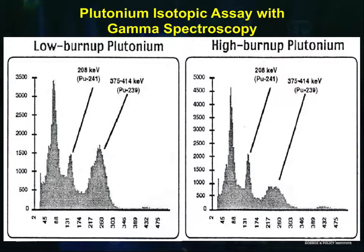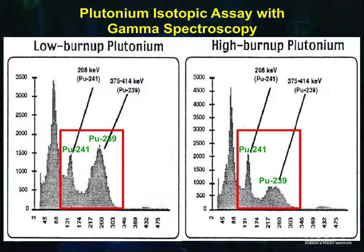Plutonium isotopic concentrations are, again, relatively straightforward to measure. Low burnup plutonium has a relatively small amount of plutonium 241 signal compared to reactor grade or high burnup plutonium.